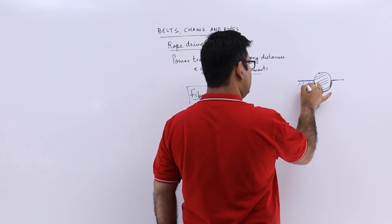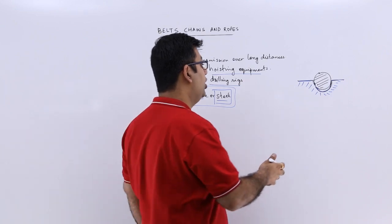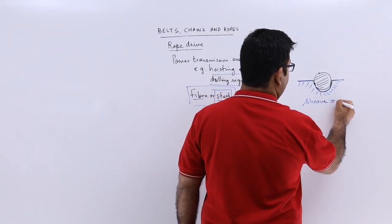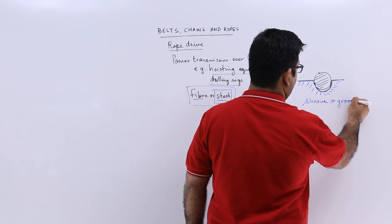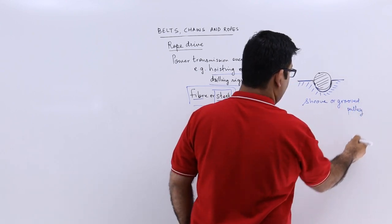So this grooved pulley, you can say this grooved pulley, this is called a sheave or this is also called a grooved pulley.